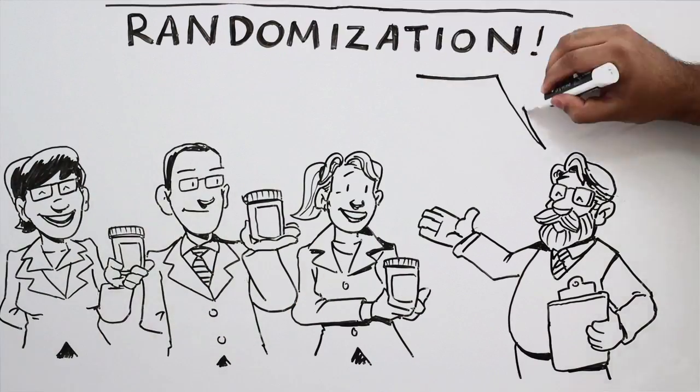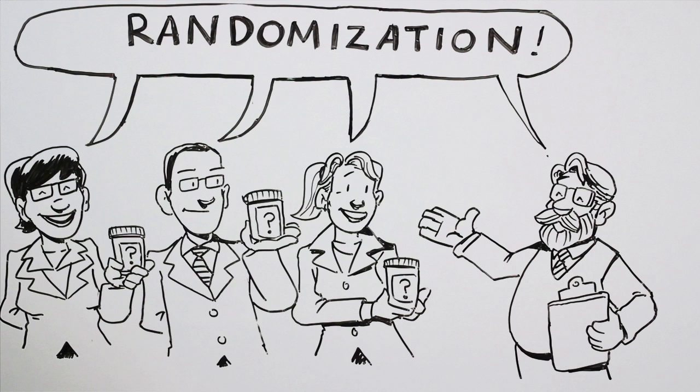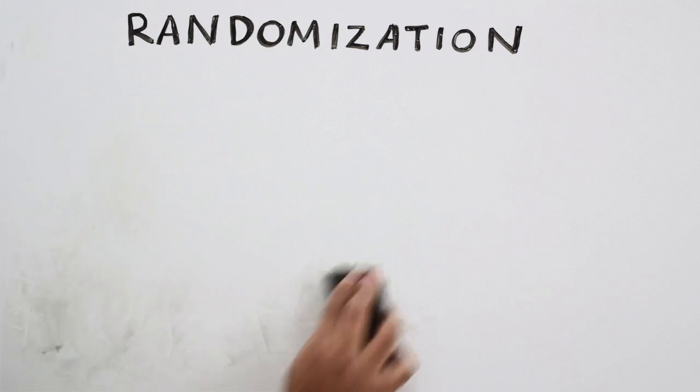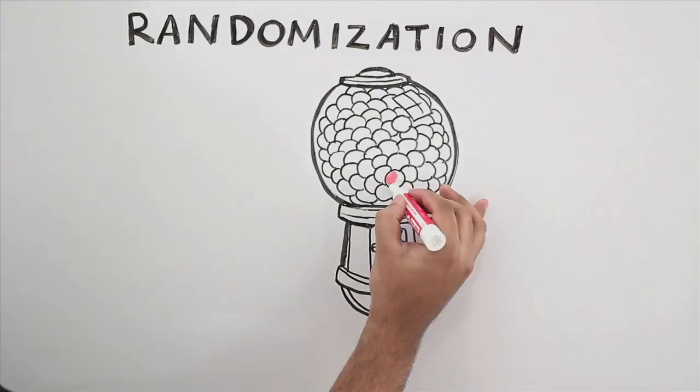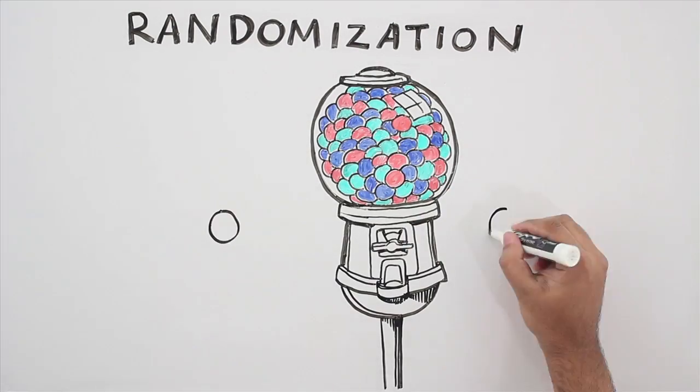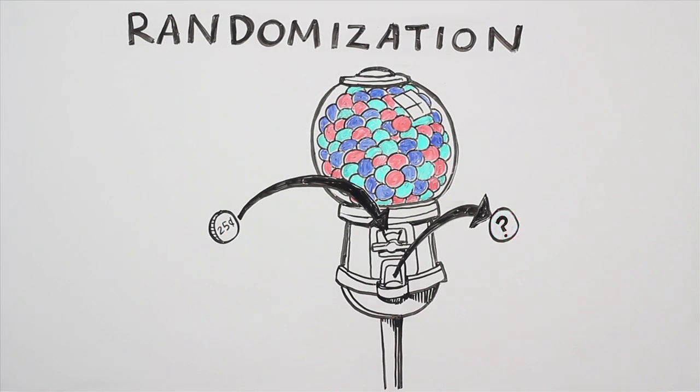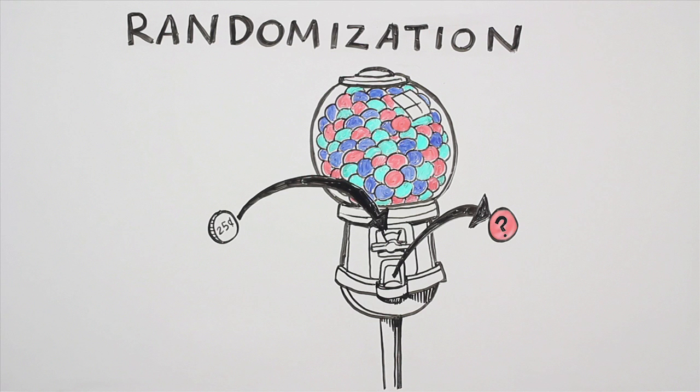Randomization is another research method Robert and the doctors can decide to use to overcome the limitations of medical record review. But what is randomization? Imagine a gumball machine. You put in a quarter and then a gumball comes out. The color of the gumball that comes out is decided by chance, but no matter what color gumball you get, you know it's a gumball.